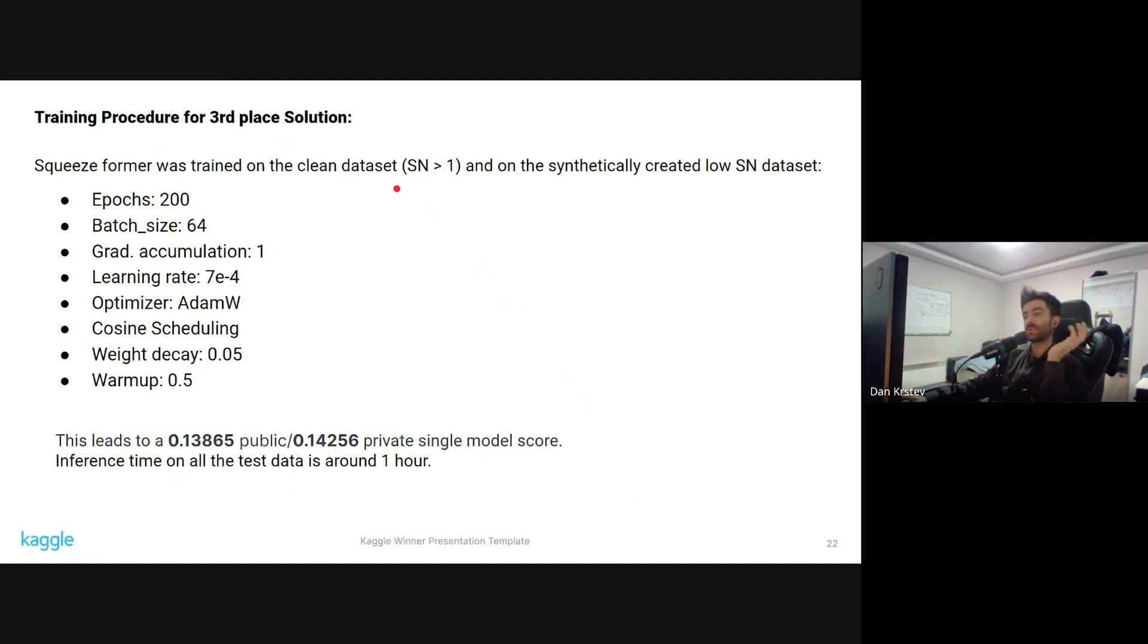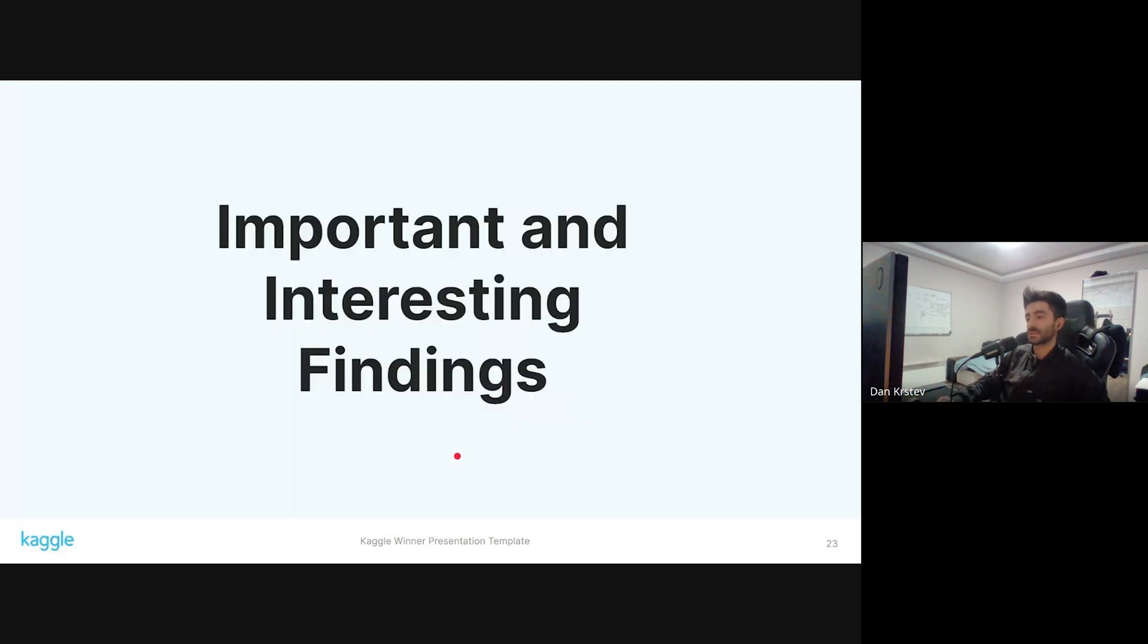The training procedure for the third place solution, the Squeezeformer architecture: The Squeezeformer was trained on the clean dataset but also on the synthetically created dataset. Longer epochs, 200 epochs, batch size 64, no grad accumulation, and all of this is just standard stuff. This leads to 0.13865 public and 0.14256 private single model score. Inference time is around one hour on the full test dataset.